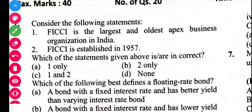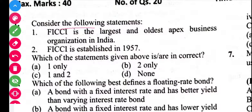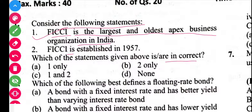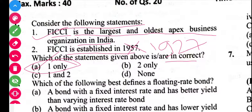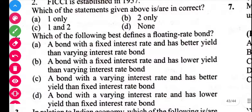The first question is related to FICCI. Consider the following statements about FICCI. FICCI is the largest and the oldest apex business organization in India — correct. FICCI was established in 1957 — no, it was established in 1927. So the first statement is correct and the second is incorrect. The correct answer is A.